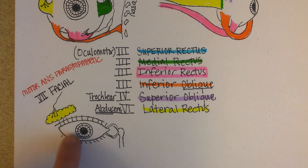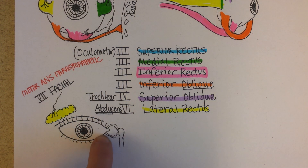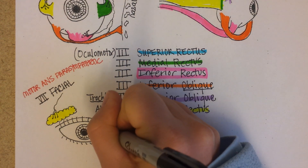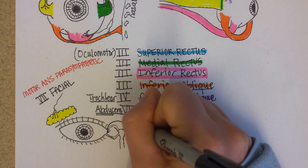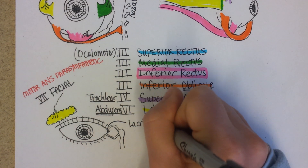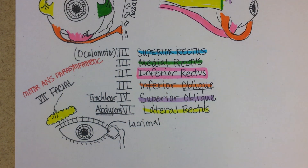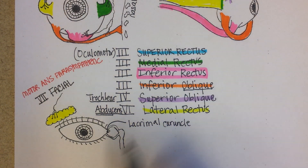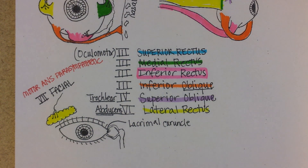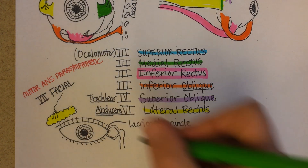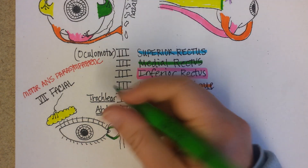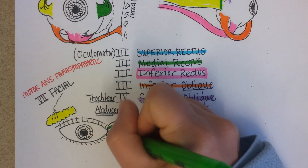The tears get formed and they drain across the eye to keep it moist, and then they drain over here. This funny pink thing in the corner of your eye is called the lacrimal caruncula. There are two tear ducts that drain from the corner of the eye down to the tear sac.